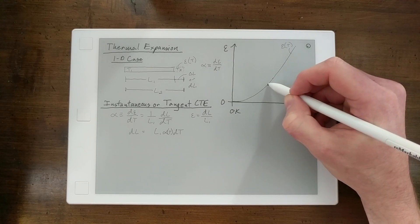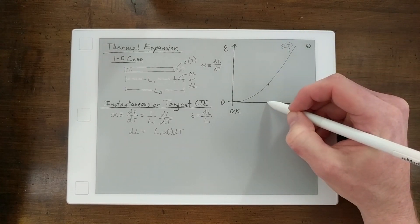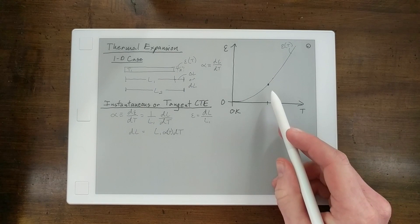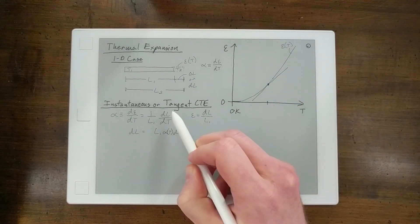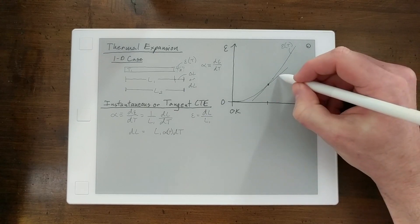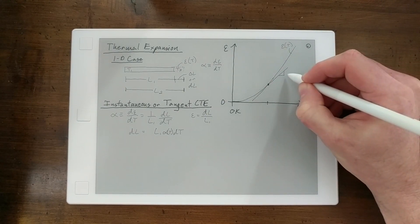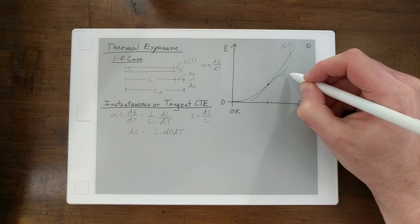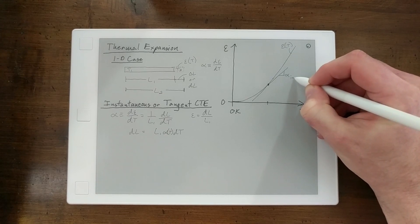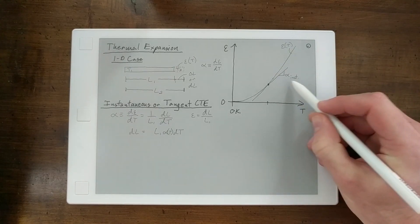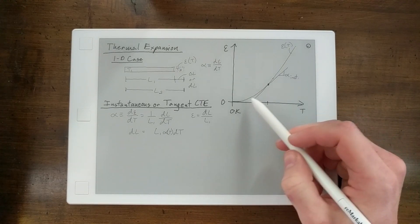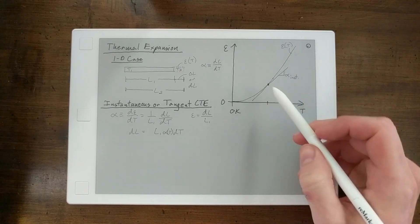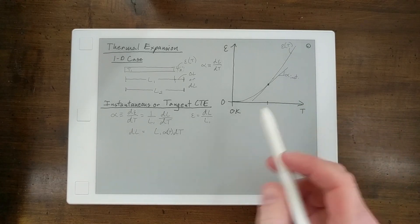You can see that the slope here is different than the slope up here. And so, to illustrate that for you, at a particular temperature you will have a particular slope, and this is why it's called the tangent CTE. And this slope is your alpha instantaneous, or alpha tangent. And so, alpha is actually a function of temperature. You can see how the slope changes, or alpha changes, with temperature.